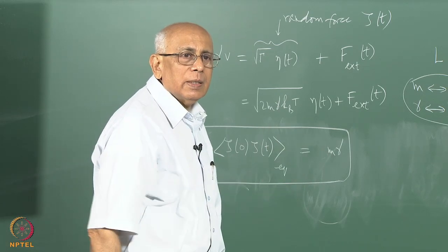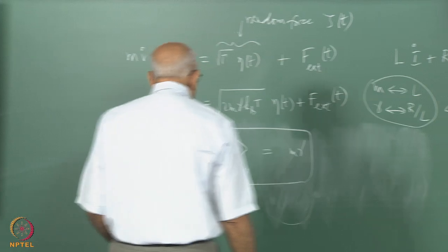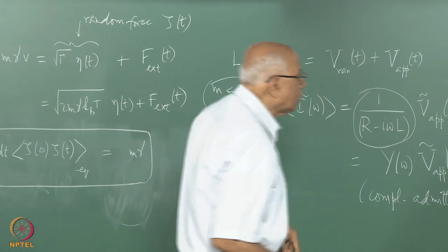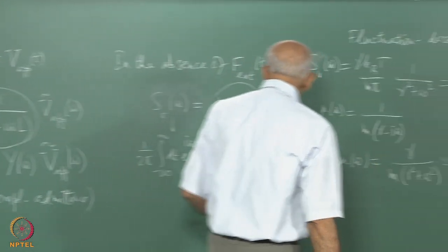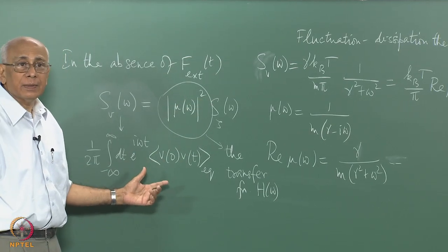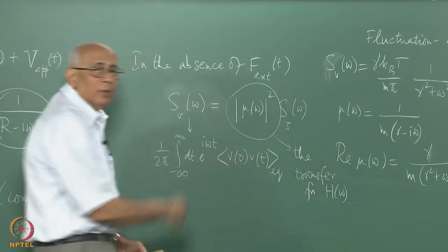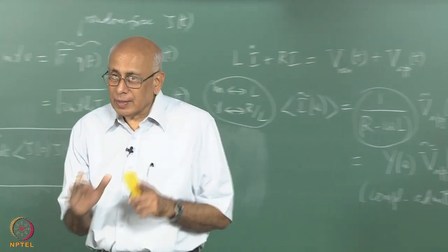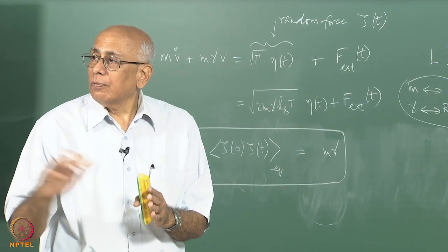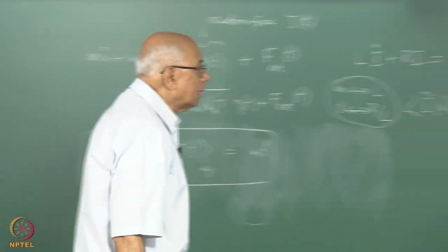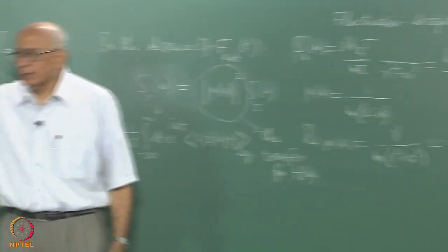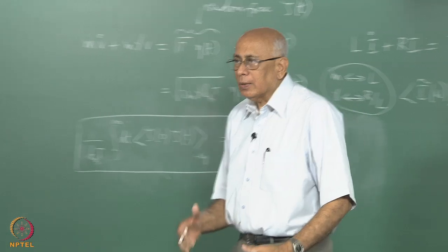Let us try to put this in a more general framework. Is it possible to write a formula for μ(ω) directly in terms of the velocity autocorrelation function? The answer is yes. I want to connect the dynamic mobility μ(ω) directly to an integral over the autocorrelation of the velocity — it is already implicit in the relations we have, but we will make this relation explicit.